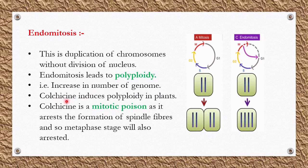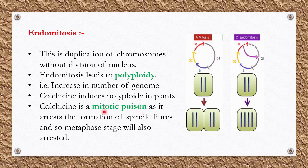Polyploidy can be induced artificially by using colchicine, a chemical extracted from plants. Colchicine acts as a mitotic poison — it stops or interferes with mitotic phases. As you know, mitosis comprises four stages: prophase, metaphase, anaphase, and telophase. Adding colchicine disrupts these phases, because it arrests the formation of spindle fiber, thereby interfering with the mitotic division.